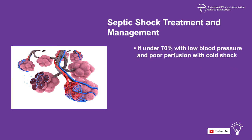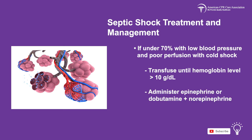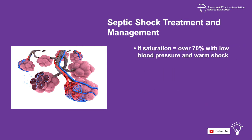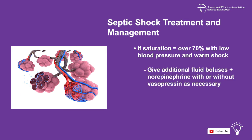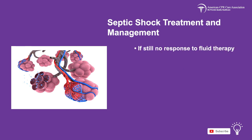If the central venous oxygen saturation is under 70% with low blood pressure, poor perfusion, and cold shock, transfuse until hemoglobin level of more than 10 grams per deciliter is reached. Also consider epinephrine, or alternatively dobutamine and norepinephrine. If the saturation is over 70% with low blood pressure and warm shock, give the patient additional fluid boluses and norepinephrine with or without vasopressin as necessary. If there is still no response to fluid therapy, transfer them to the ICU and continue monitoring. Please refer to the chart in this section for more detail.